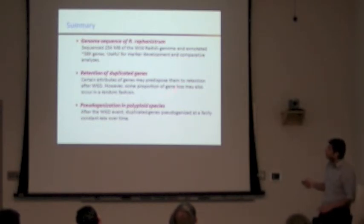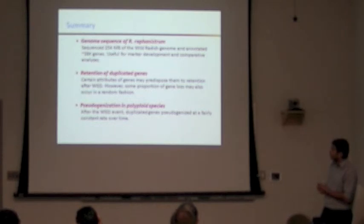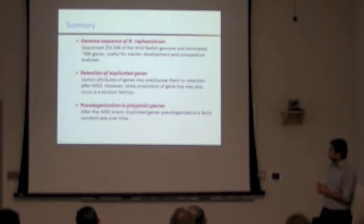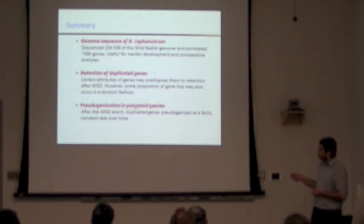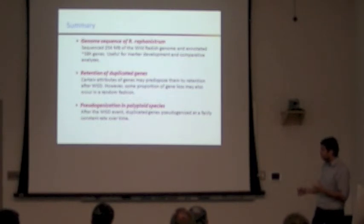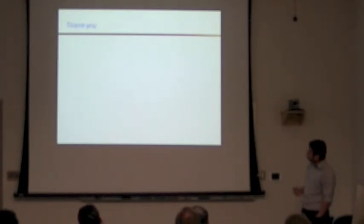To summarize: we have sequenced about 254 MB of the Raphanus genome and identified about 38,000 genes. Our results suggest that certain gene attributes — like high expression level, breadth of expression, and importance in networks — may play an important role in whether genes are retained post whole genome duplication. After the duplication event, the duplicate genes that were created will be lost at a consistent rate over time.